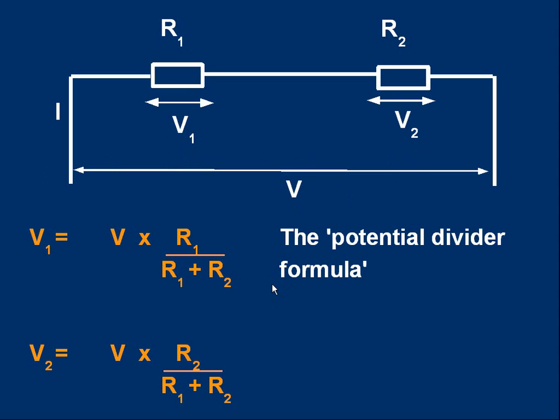Let's suppose we have resistors R1 and R2 with voltages V1 and V2 and an overall voltage V. To find V1, we use the potential divider formula.